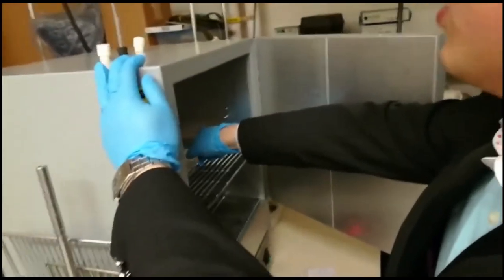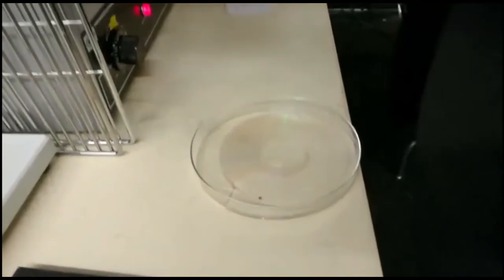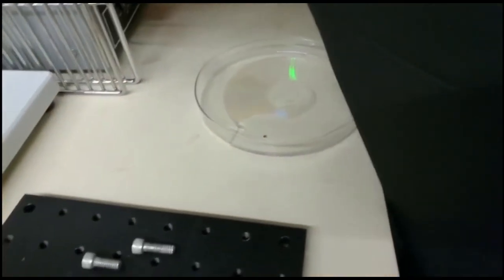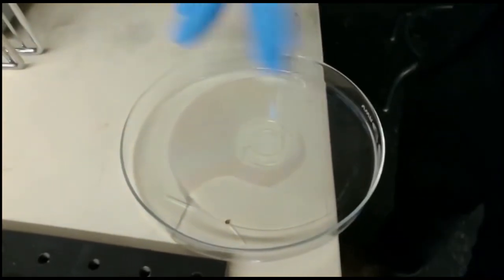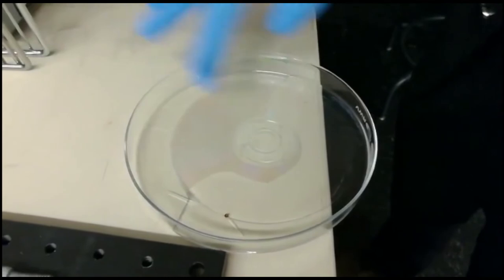Here is the PDMS mold. Be careful, it's still 80 degrees. We turn off the oven, and you can see this is a PDMS mold. It's very transparent on the DVD grating disc.